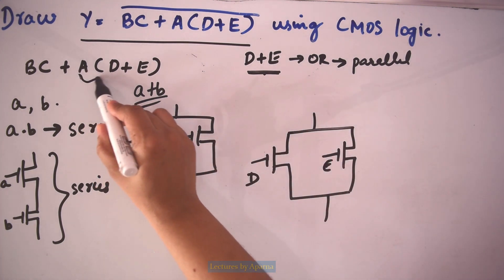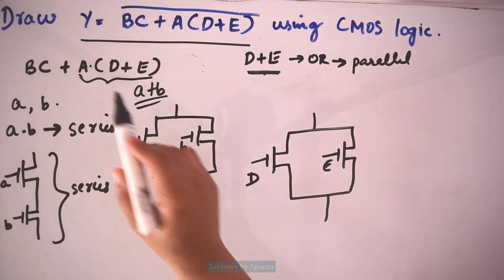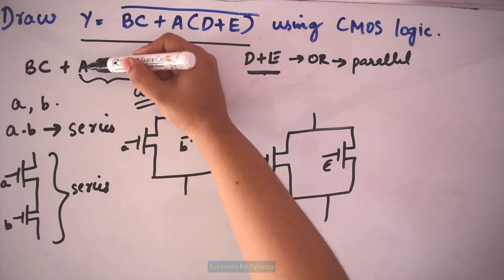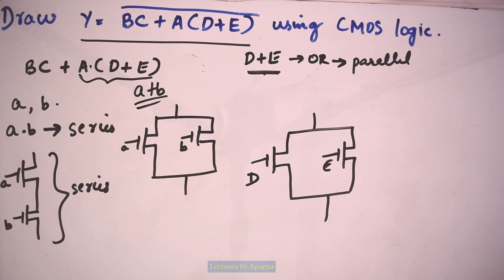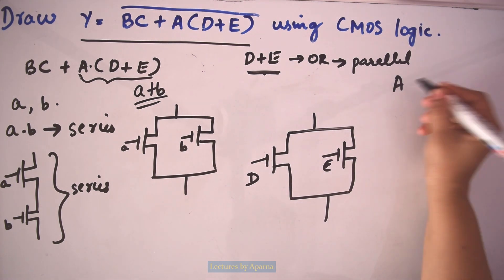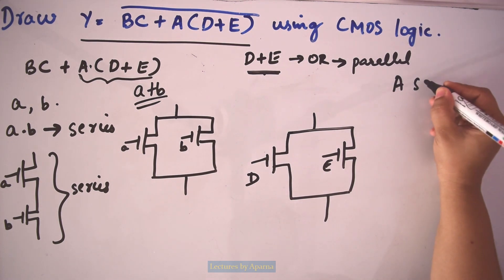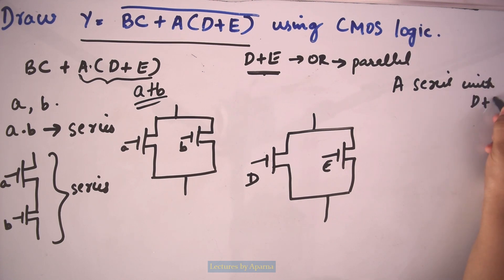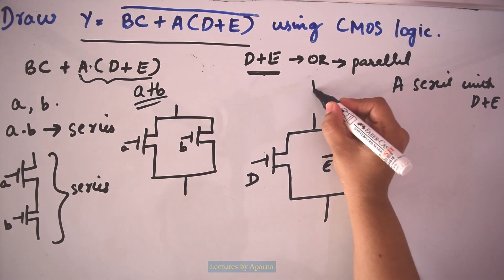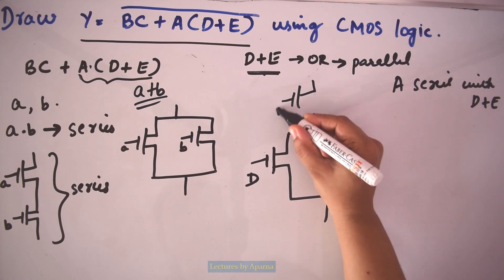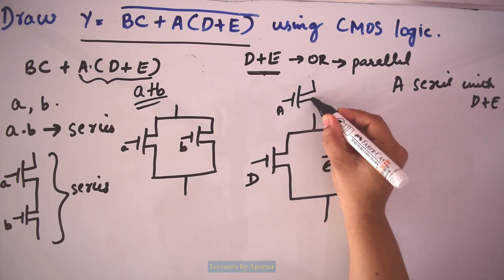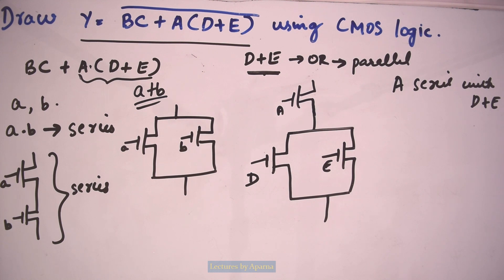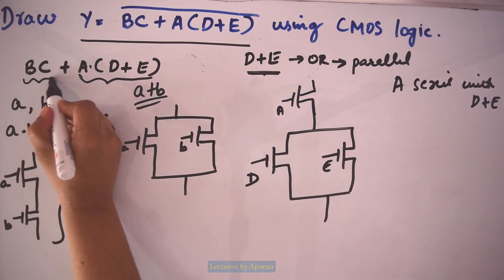Next is A into (D plus E), which is an AND operation. So it means A is in series with the D plus E block. I have to connect the transistor with input A in series with the parallel combination of D and E.